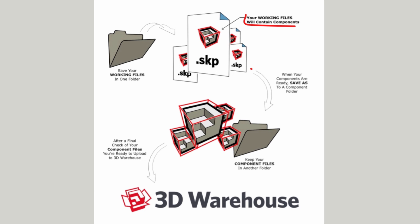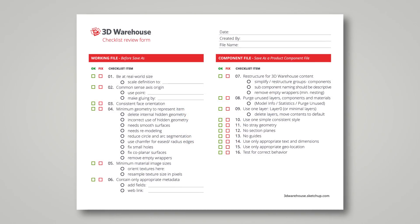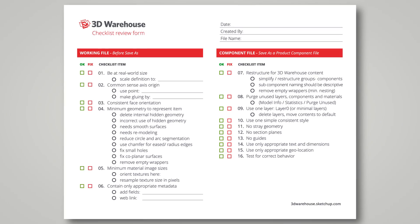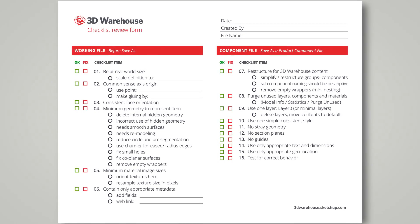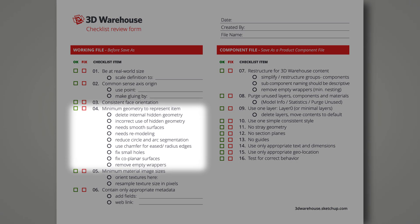Then use Save As and send the finished component out to a library folder for upload to 3D Warehouse. Content from 3D Warehouse is typically being used within a larger design context, and not as a standalone model. Low polygon, simply textured models are great for general consumption.